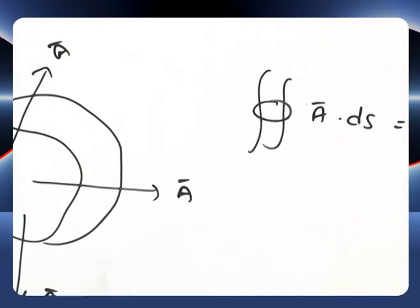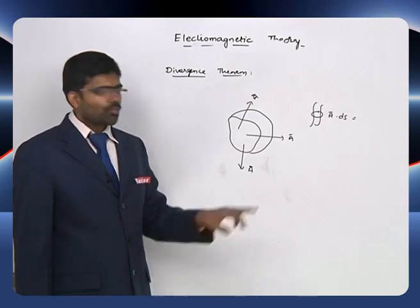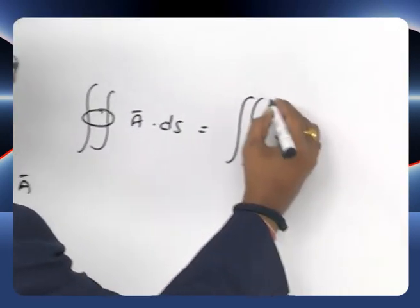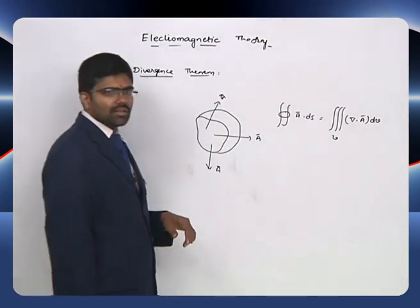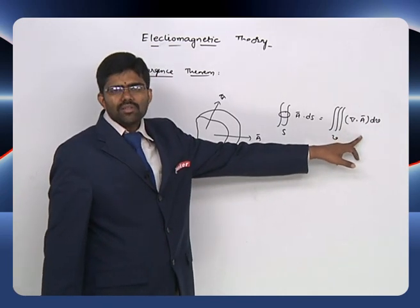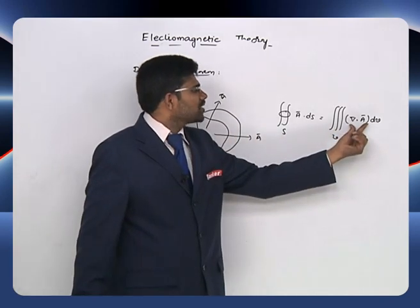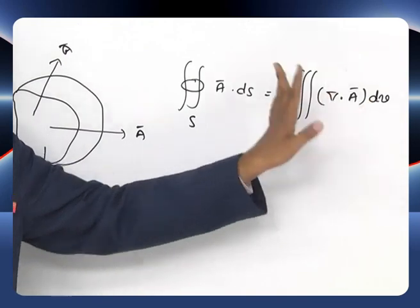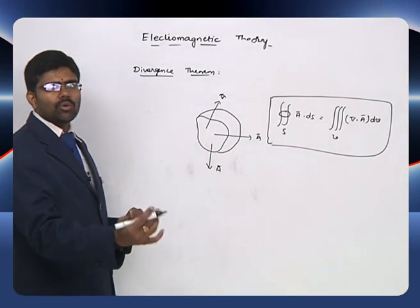The divergence theorem states that the quantity leaving the surface equals the quantity inside that particular volume, which can be calculated using the volume integral of divergence from the volume dv. So the closed surface integral of A-bar dot ds is equal to the volume integral of del dot A-bar dv. This is a very important relation we need to remember for electromagnetic theory.